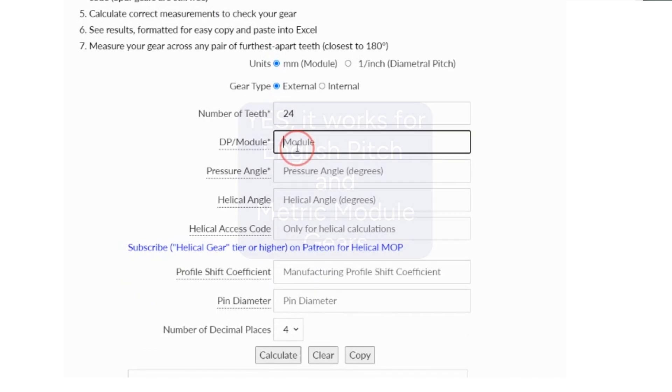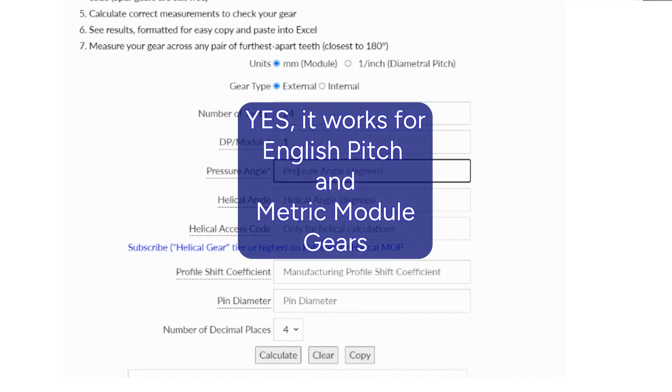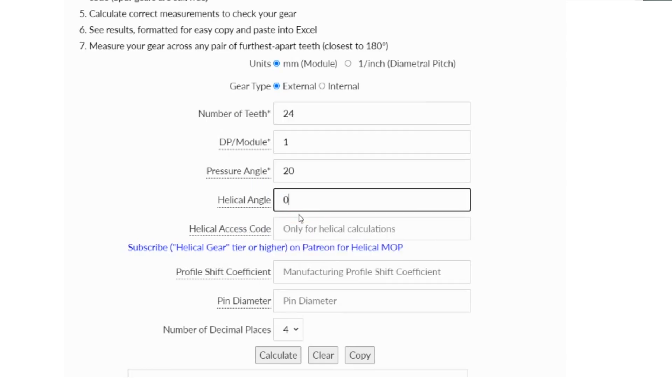Put in the numbers for your gear. Put in zero because it's a spur gear.